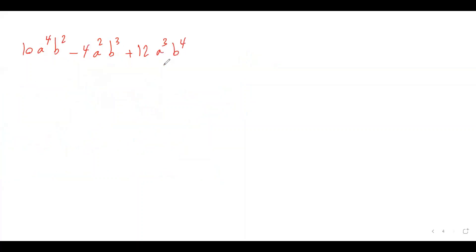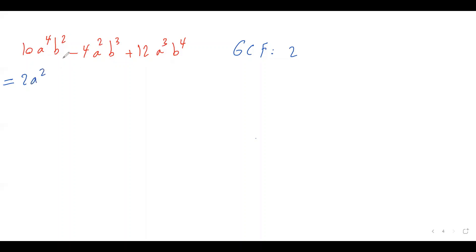Move on to the last example. I have an expression with three terms that I need to factor. The first thing is to find the greatest common factor. Start with the coefficients: 10, 4, and 12. The greatest common factor between them is 2. For variable a: I have a to the power of 4, a squared, and a cubed — choose the lowest exponent, which is a squared. For variable b: I have b squared, b cubed, and b to the power of 4 — choose b squared. So the common factor is 2a squared b squared.